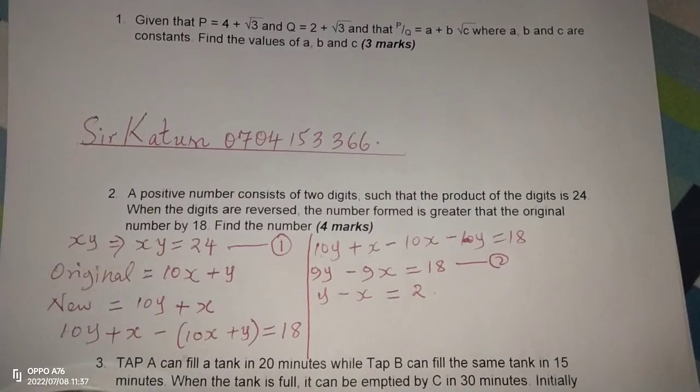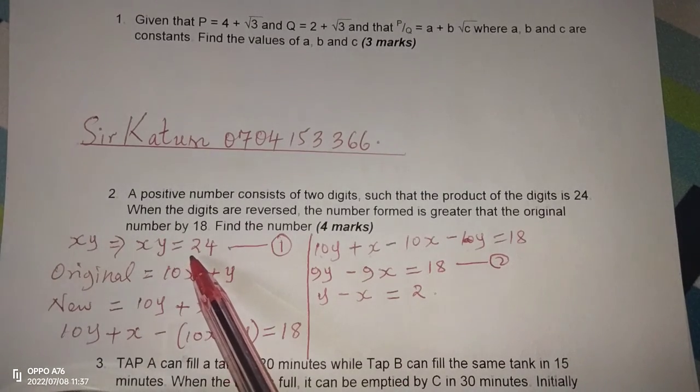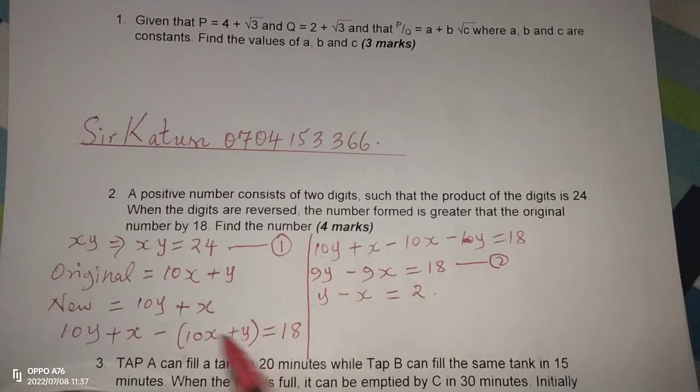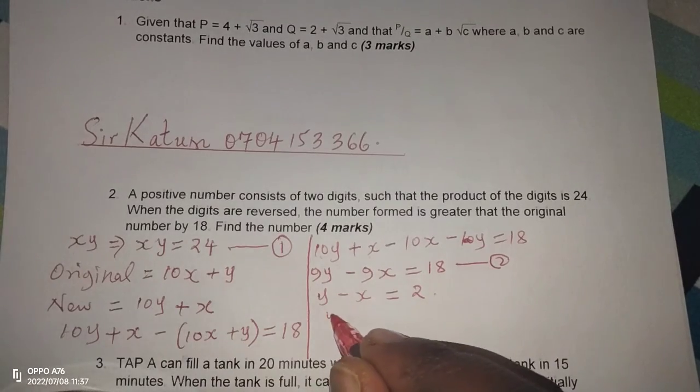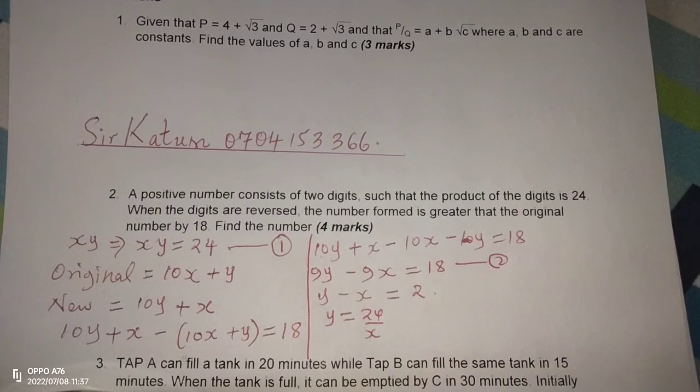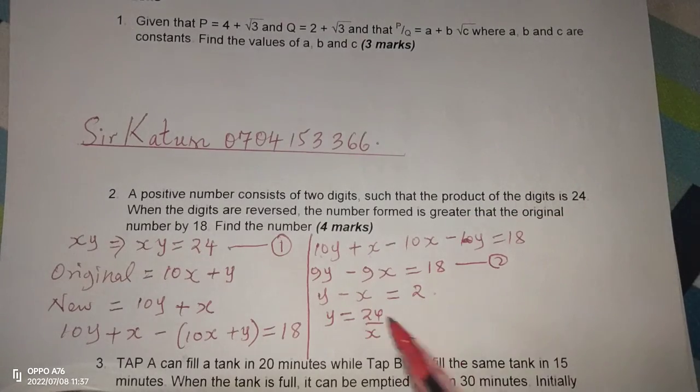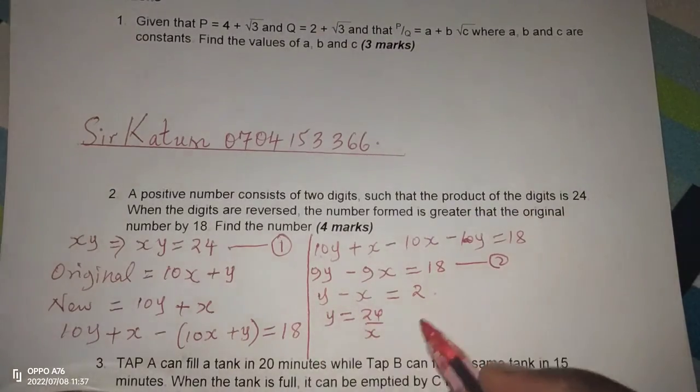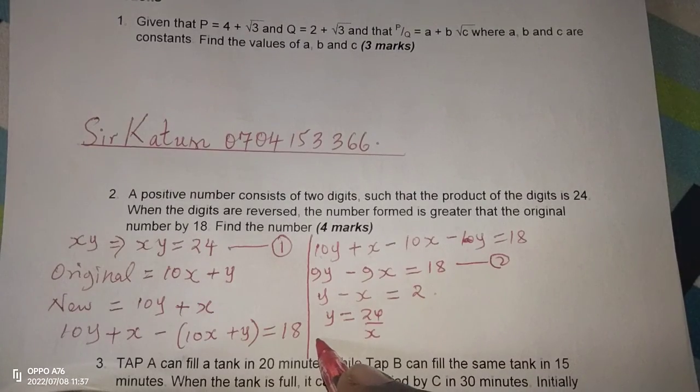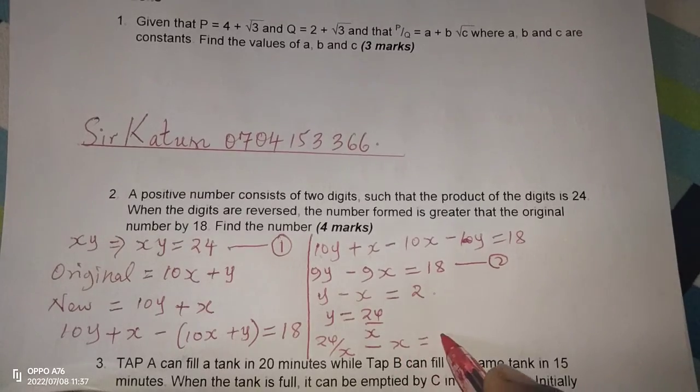So now we can solve the two equations simultaneously. In this first case, we can say from equation 1, Y is equal to 24 over X. If Y equals 24 over X, now we can use substitution, such that in the second equation where we have Y, we rewrite the second equation with 24 over X instead of Y, then minus X equals 2.